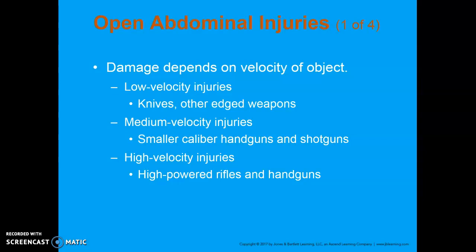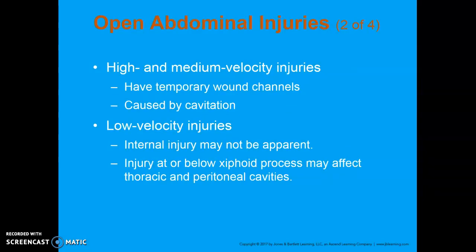The severity of open injuries often depends on the velocity of the object. Low-velocity injuries are handheld objects like knives and edged weapons. Medium-velocity are smaller caliber handguns and shotguns. High-velocity are high-powered rifles and higher-powered handguns. With high and medium velocity injuries, you end up with a temporary wound channel in addition to entrance and exit wounds due to cavitation — a cavity forms when the pressure wave in front of the projectile transfers to the tissues, causing microscopic tears to blood vessels and nerves and producing a large amount of bleeding. The higher the velocity, the larger the cavity produced.